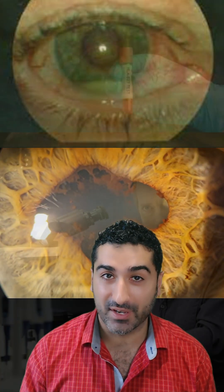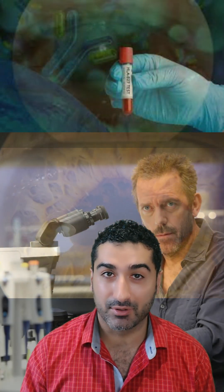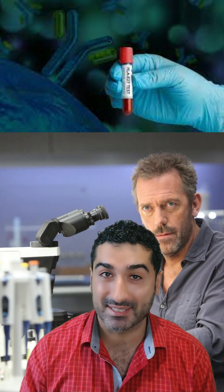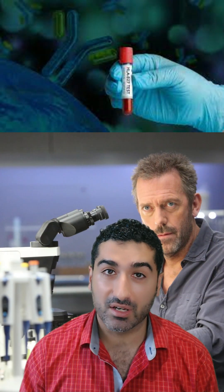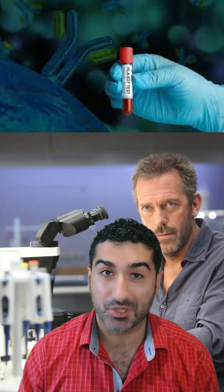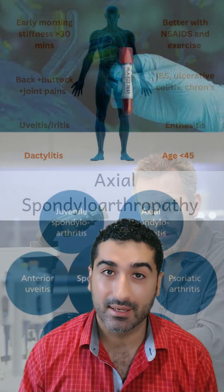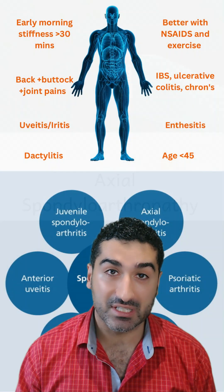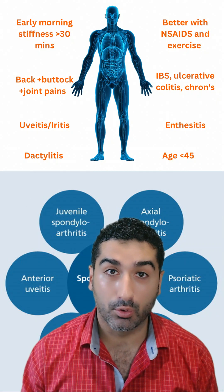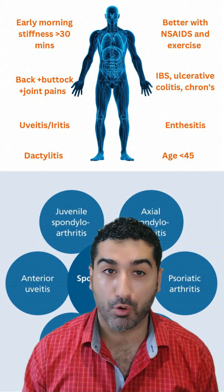Actually doing the test for HLA-B27 is a bit of a grey area, but it is important to ask for other conditions which can be linked to this. In particular, ankylosing spondylitis and axial spondylarthropathy.